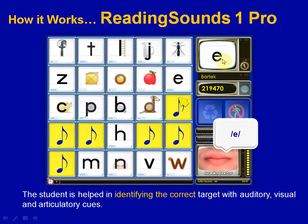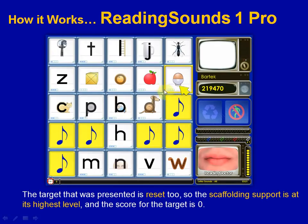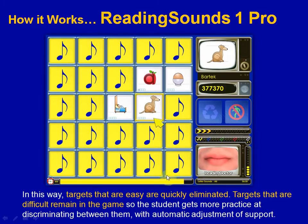The target that the student was supposed to identify is presented in a simple picture-matching format, and when the target is identified, the scaffolding support for that particular target is also reset to its maximum. Using this mechanism, the program automatically eliminates targets that the student is confident with while providing extra multi-sensory scaffolding support for target pairs that have been confused by the student.